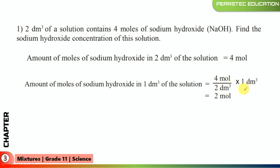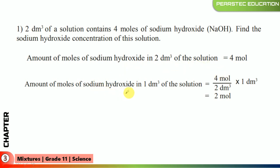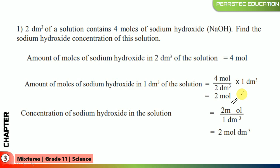So 4 moles divided by 2 gives the amount per 1 cubic decimeter. For example, if it were 20 moles in 5 cubic decimeters, the equation would be 20 over 5 and then scaled to 1. In our example, 4 moles divided by 2 gives 2 moles. So the amount of moles of sodium hydroxide in one cubic decimeter of solution is 2 moles. Therefore, the concentration of sodium hydroxide in this solution is 2 moles per cubic decimeter.